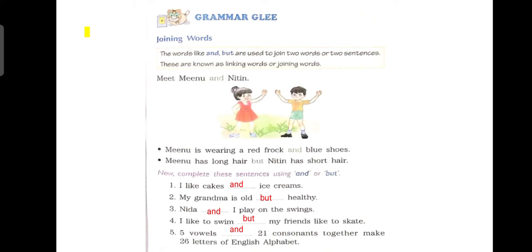Five vowels and twenty-one consonants together make twenty-six letters of English alphabet.